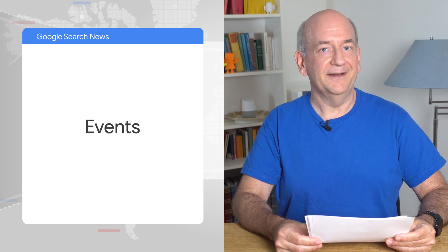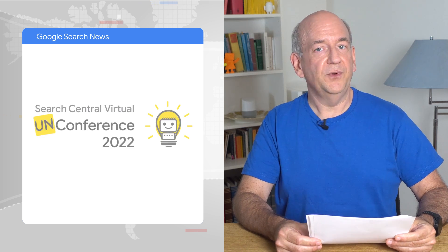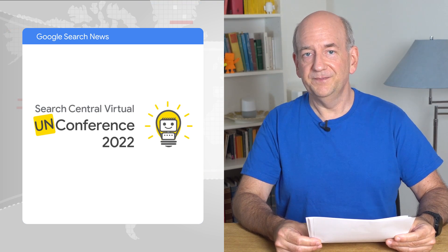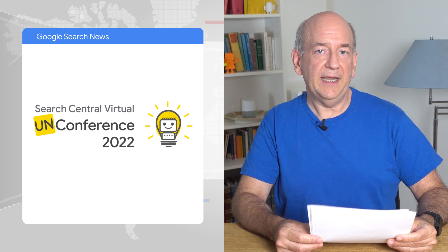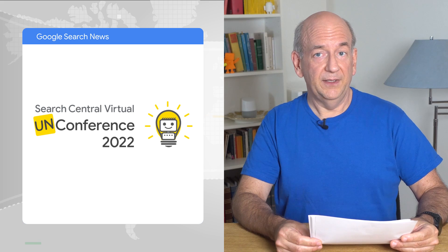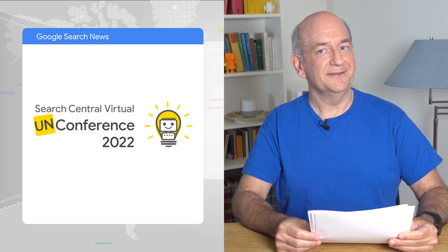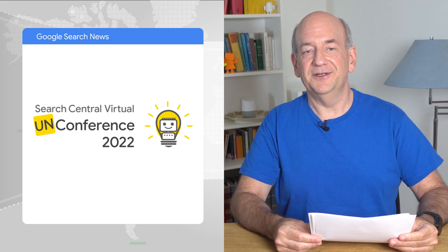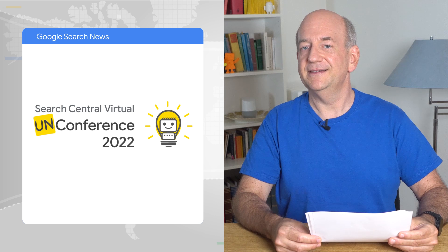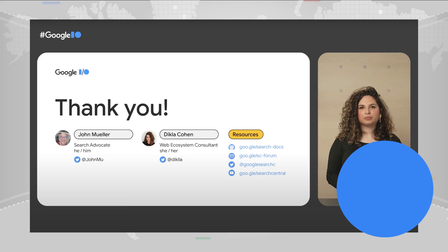Folks on the Search Relations team are now back at events. We started off this year with virtual unconferences in Japanese and in English. These are smaller events where everyone takes part, and folks can discuss topics together with people from Google. We currently don't have the next one finalized, but knowing the organizers, I'm sure we'll have more. If you're cautious about going to big events, an unconference might be a great way to get started, so watch out for the next one.